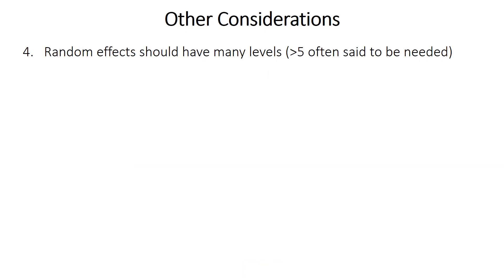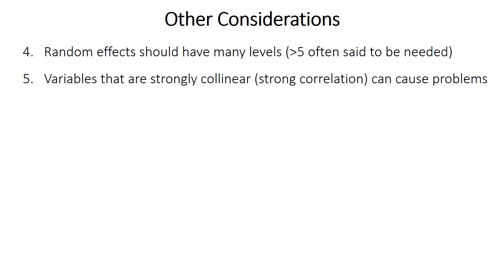There are even more things to consider. Your random effects should have many levels or categories — it's often said you want at least five groups within a random effect variable, but more is better, because the method needs to estimate the distribution of means for your random effects from a common distribution, and with only four or five categories, it's hard to estimate that parameter accurately. If you only have two or three groups, you can instead treat them as fixed effects. Also, if you have independent variables that are strongly collinear with one another, that can cause problems both with the coefficients and with model fitting.